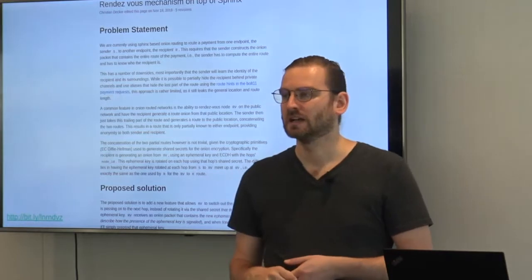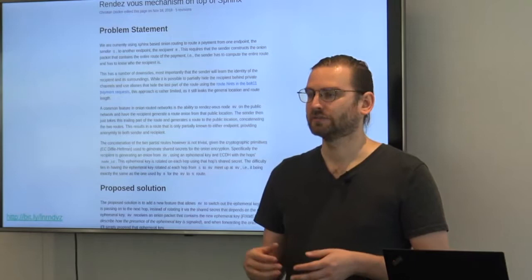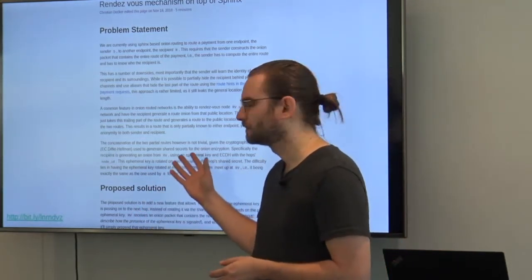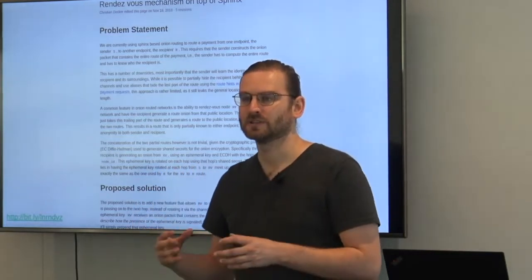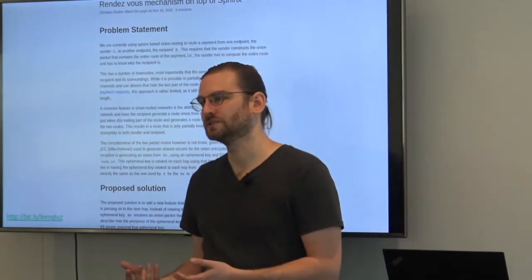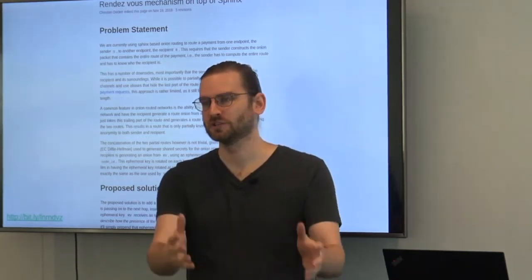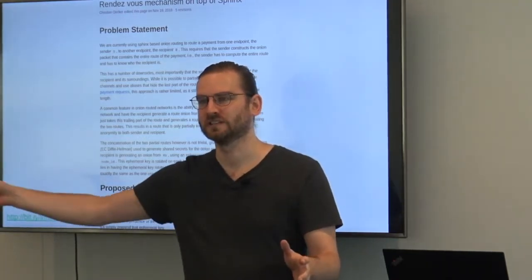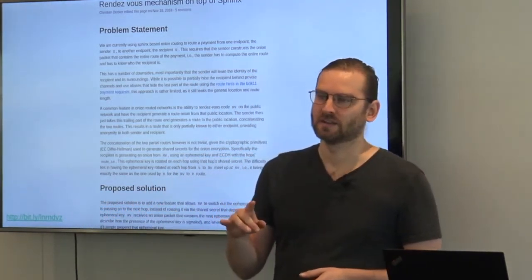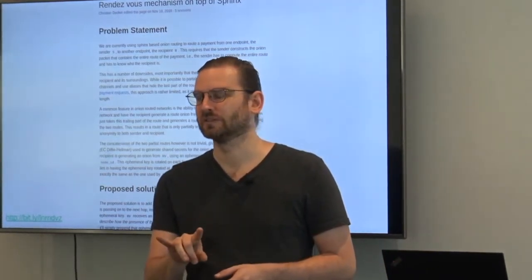We basically just have that. So the actual solution is, hey, in the payload for the rendezvous point, the point where these two onions meet up, we just say, hey, instead of generating the ephemeral keys like we used to, just use this. And this, the ephemeral key that we switch in, is basically just the ephemeral key that we got from the recipient. So we have this 33-byte ephemeral key that is hidden inside of the payload for the rendezvous point.